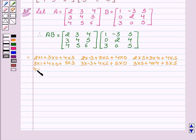for the last row, 4 into 1 plus 5 into 3. Then 4 into minus 3 plus 5 into 2 plus 6 into 0. And 4 into 5 plus 5 into 4 plus 6 into 5.